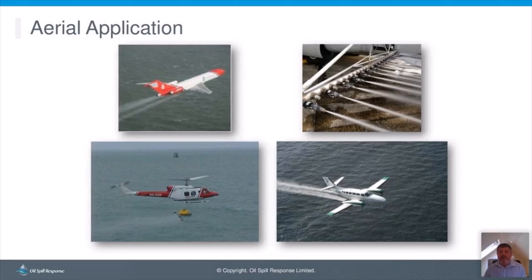Aerial application can be carried out from a variety of aircraft. A Boeing 727 can carry large volumes; helicopters carry smaller volumes but are highly maneuverable and good for spot spraying smaller slicks; and small aircraft are used for smaller spills and to carry out test sprays prior to larger aircraft being tasked. The dispersant spray coming out of aircraft booms must arrive on the oil surface in the right sized droplets, so significant design and testing goes into ensuring aircraft nozzles deliver an even spray pattern over the swath width with the correct droplet size.